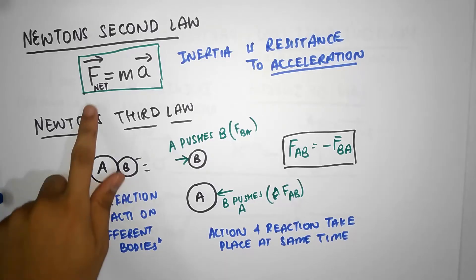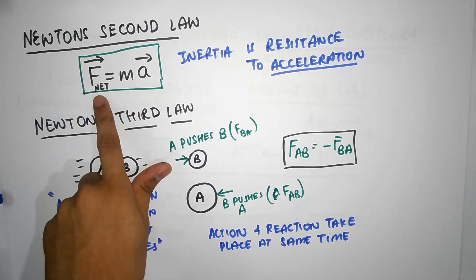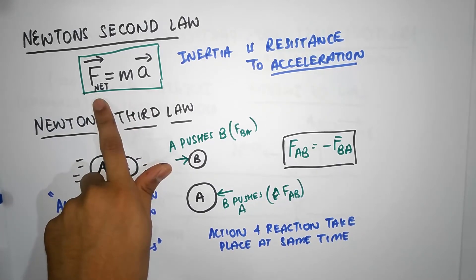The two forces are action-reaction pairs and therefore they have to be equal to each other. The reason why the football gets blasted off and you stay intact is mainly because of second law. You see, you go back to second law and you see that although the forces on both the bodies are exactly the same,